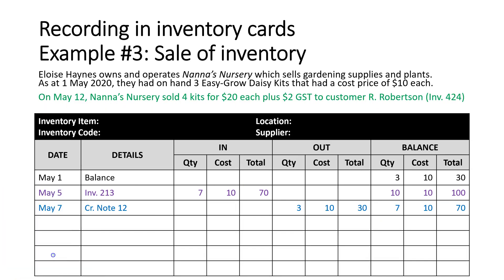Transaction three: on May 12, Nana's Nursery sold four kits for $20 each plus $2 GST to customer R. Robertson. Because this is a sale, they're leaving the business, so we put four in the Out column. Now importantly, we don't put $20 in the cost column — we put $10, because in the inventory card we deal with cost price, not selling price. The $20 is how much we sold it to the customer for, not the cost price of the inventory. So we record four items out at $10, and update the balance to three items at $10 each, totalling $30.